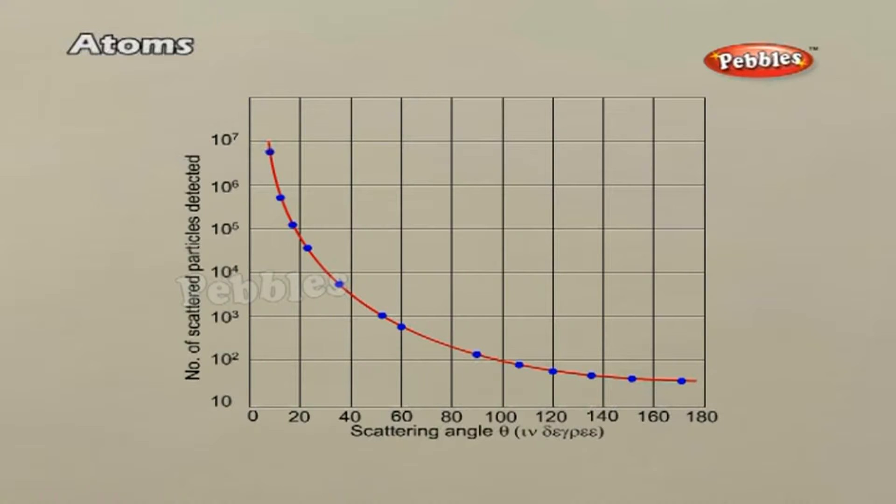Many of the alpha particles pass through the foil, meaning they do not suffer any collisions. Only about 0.10% of the incident alpha particles scatter by more than 1 degree and about 1 in 8000 deflect by more than 90 degrees.